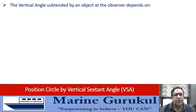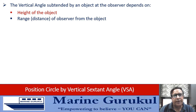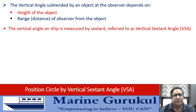The vertical angle subtended by an object at the observer depends on the height of the object and the range, or the distance, of the observer from the object. The vertical angle on the ship is measured by sextant and hence referred to as vertical sextant angle.